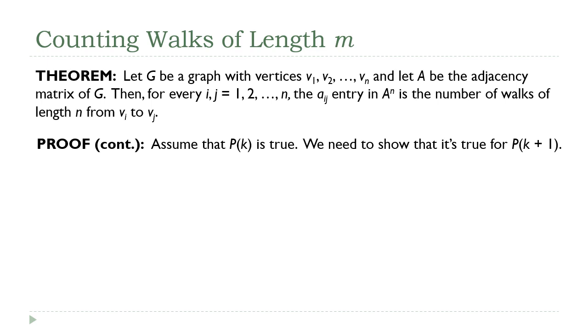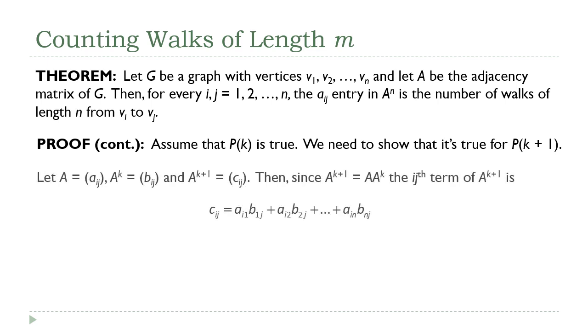Okay, so this is the induction step. We're going to assume that the statement is true for P(k), and we need to show that it's true for P(k+1). Okay, so here's where I'm going to start this off. I'm going to let the original matrix A be defined as A sub ij. When I refer to elements with the variable A, that's referring to the original matrix. When I'm referring to elements with the variable B, those are coming from A to the k. And finally, when I refer to elements of a matrix with the variable C, those are the elements of the A to the k+1 matrix. Remember, our definition of matrix multiplication, A to the k+1 is equal to A times A to the k.